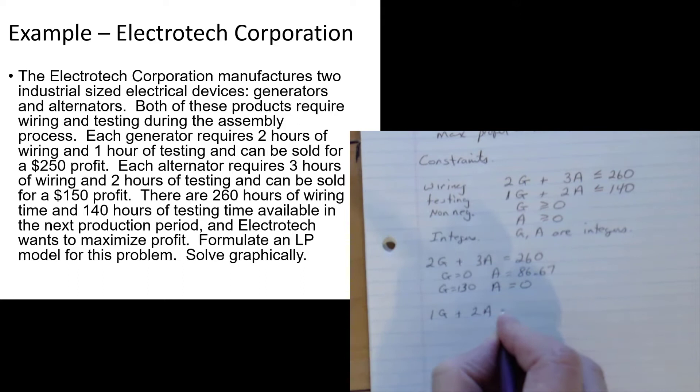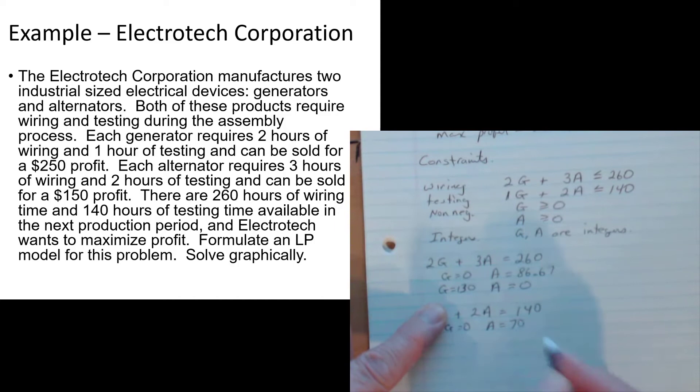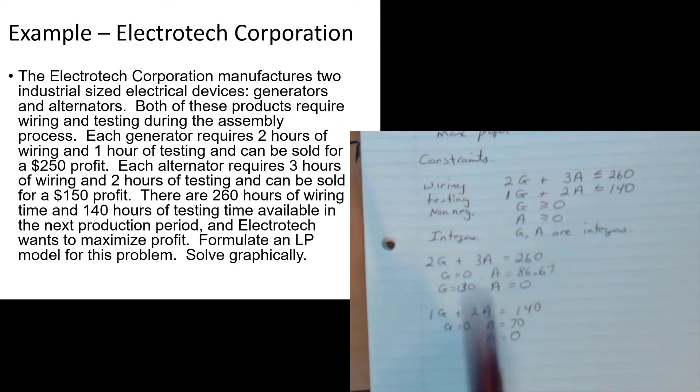For the testing constraint, 1G plus 2A equals 140: if G equals zero, then 2A equals 140, so A equals 70. And if A equals zero, G equals 140. So now I have the two intercepts for each constraint line and I'm set to graph this.